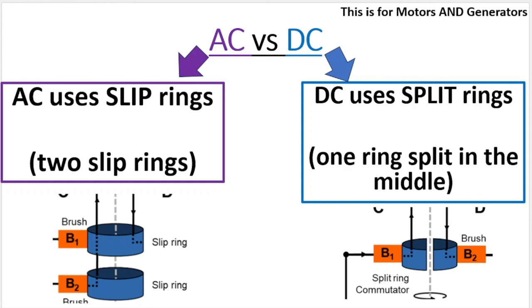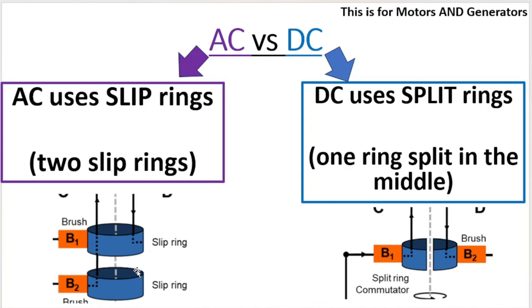So whether you see a diagram of a motor or a generator, if it has slip rings like you can see over here, two slip rings, that represents an AC machine. So we get AC generators. AC generators induce AC current. That is current that changes direction every half rotation.